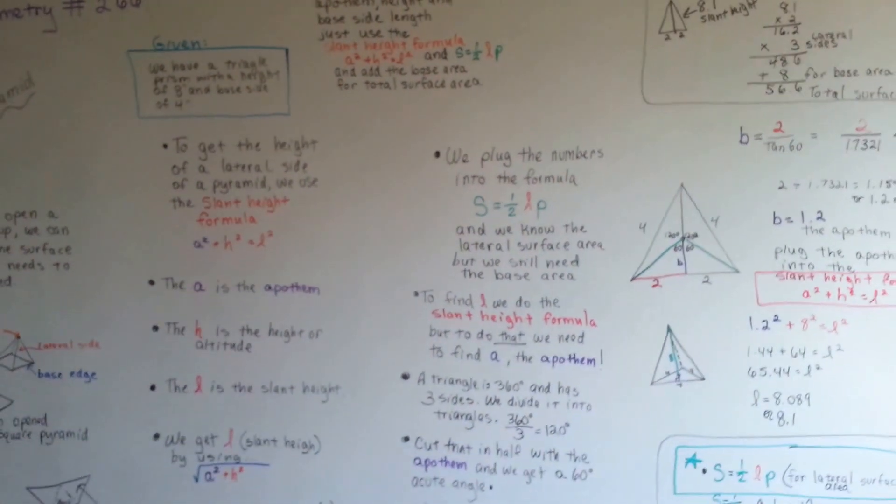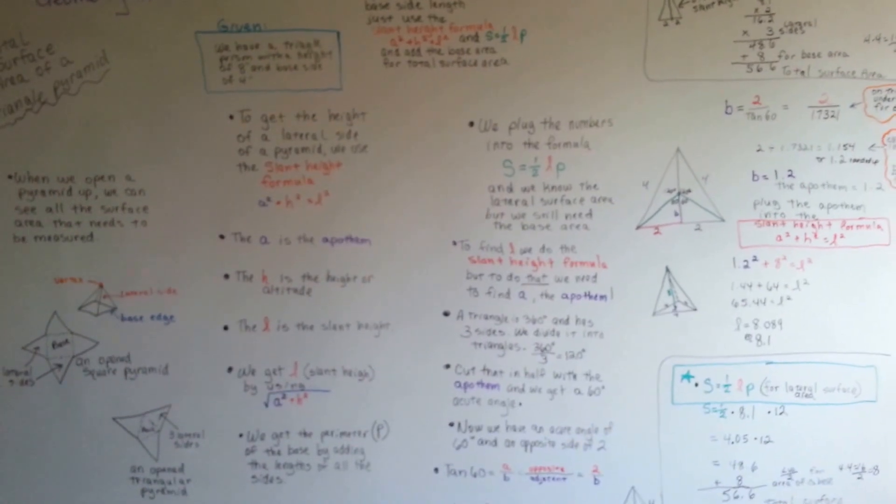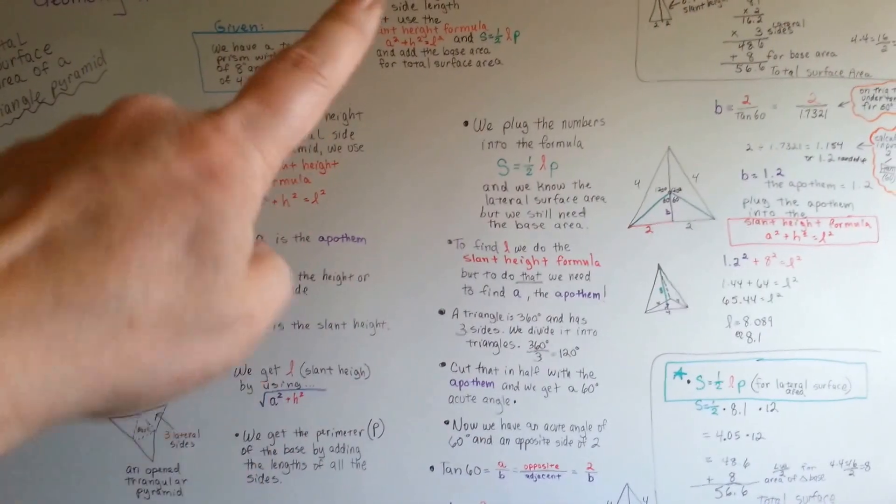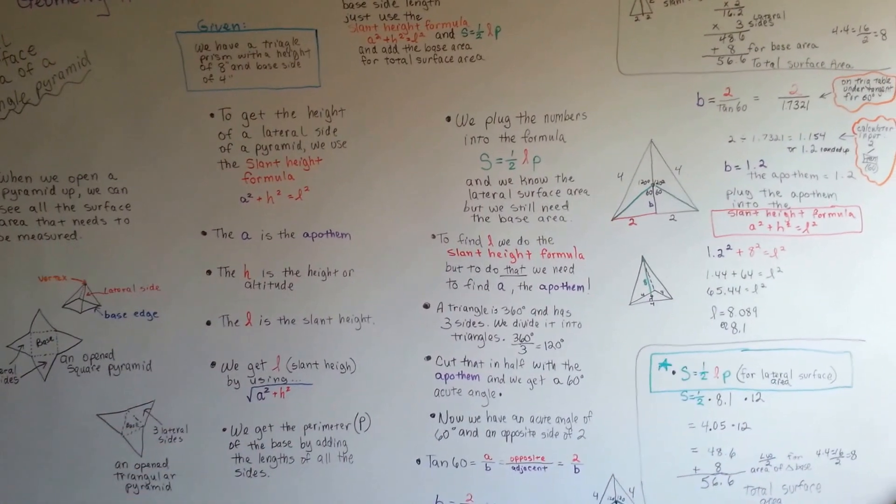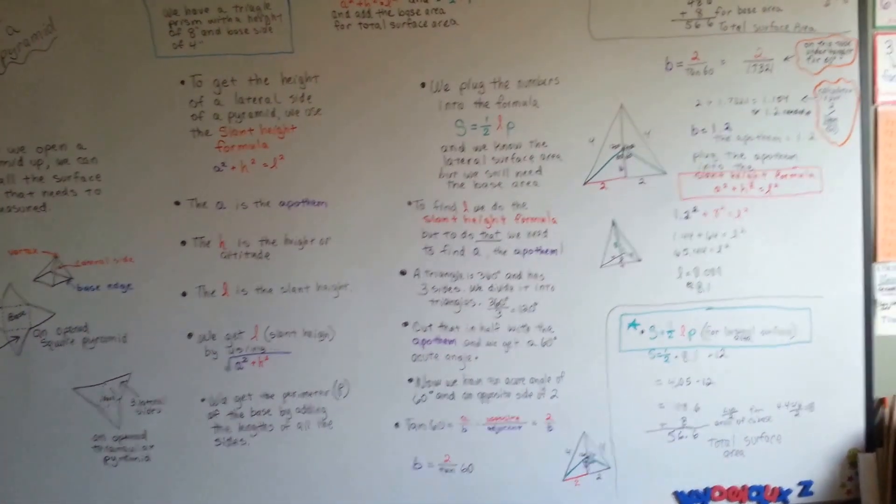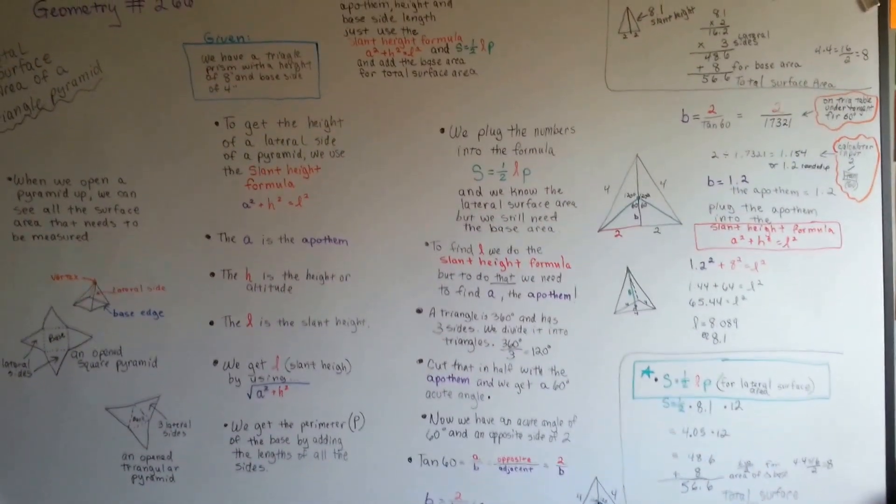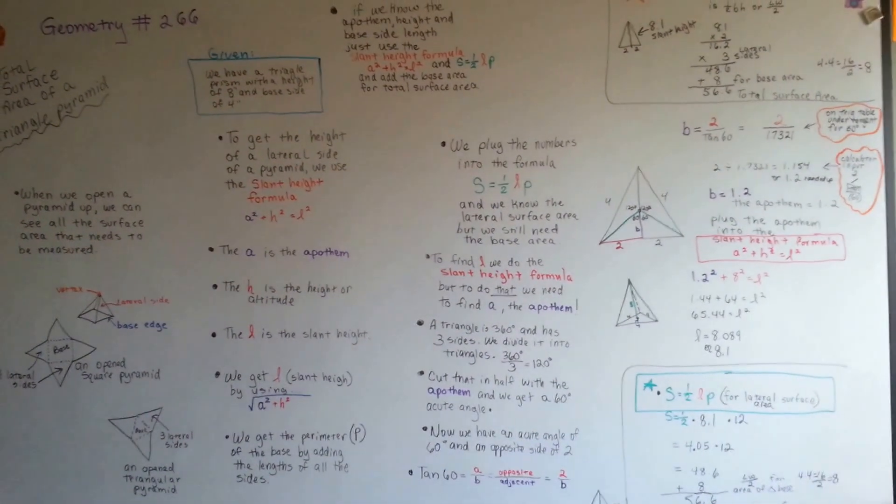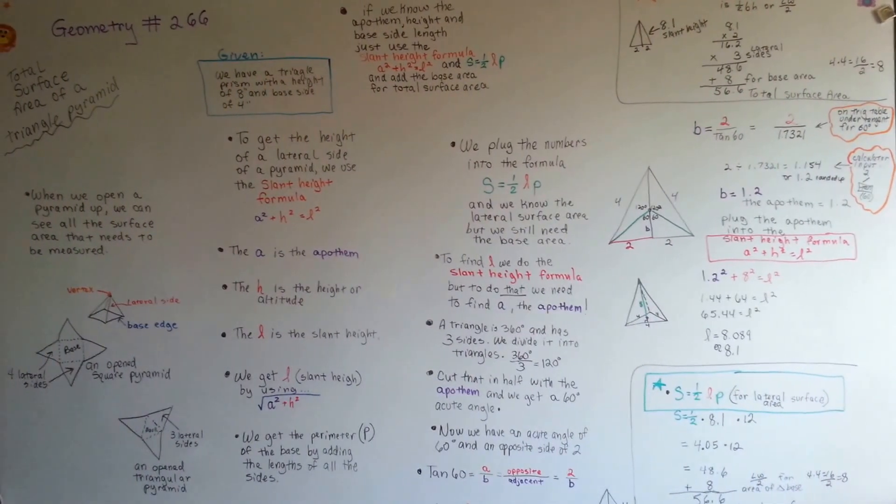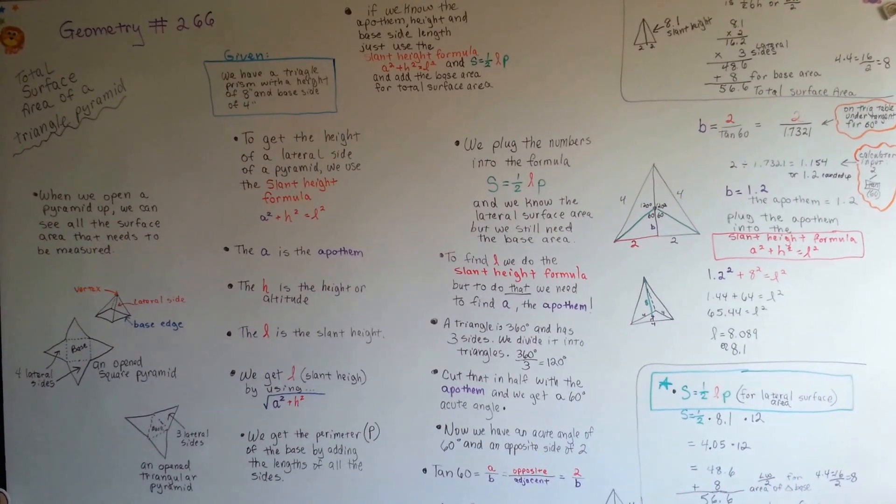You can do it without a scientific calculator because there are trig tables in the back of your book and online. And it's easy if you've got all the information already. If you don't, you need to get your apothem and that's how you find it with the trig tables. Those are the formulas you need. Keep up the good work. We're going to keep doing surface areas and volume. We're almost done with our geometry series and I'll see you next video. Bye!